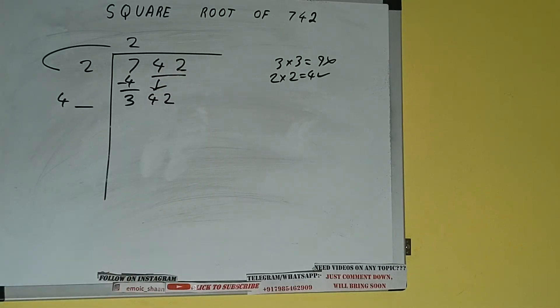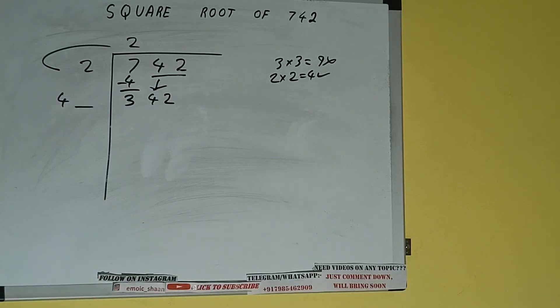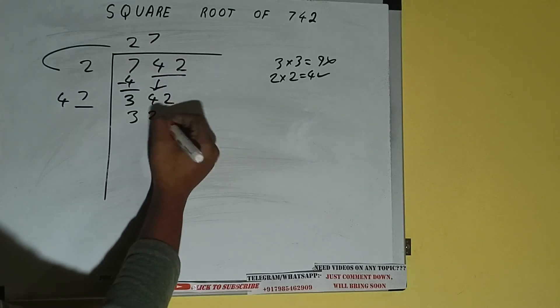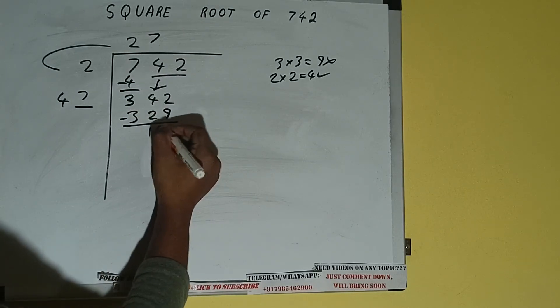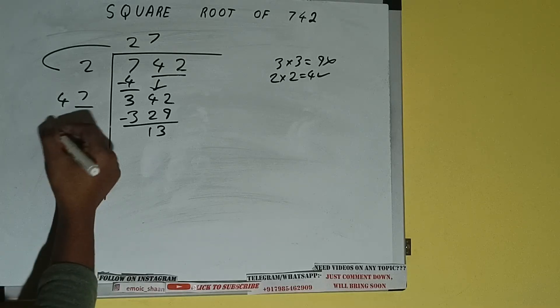Now whatever number we write here we have to write here also. So if we write 7 here and 7 here it will be 329. Subtract, 13 will be left. Now 47 into 7 we did, so add both. So 47 plus 7 will be 54 and one digit extra.